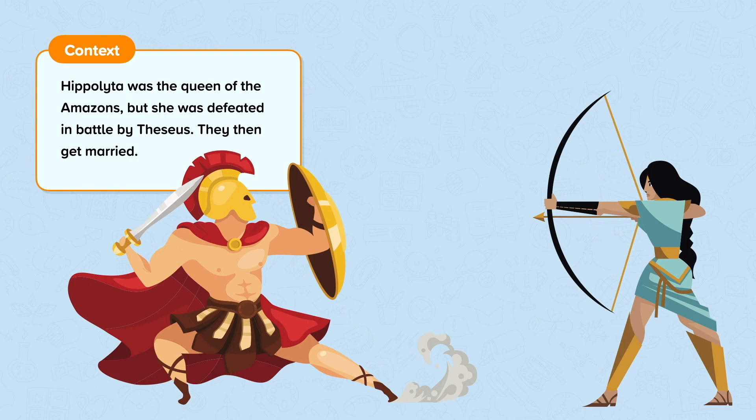In the opening lines of the play, we learn that Theseus is going to marry Hippolyta. In mythology, Hippolyta was the queen of the Amazons, but she was defeated in battle by Theseus, and they then get married.